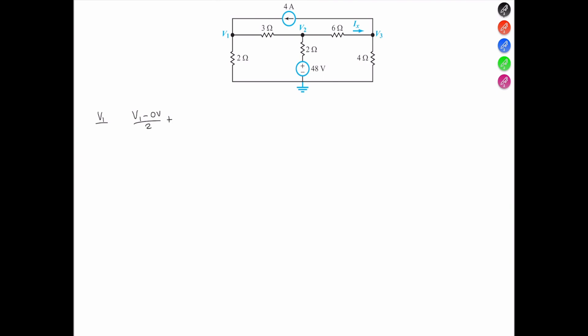Then we take V1 with reference to V2, minus V2 all over the 3-ohms resistor. Then notice that there is a 4-amp current entering to V1, and current entering a node is negative, so that's negative 4 equals 0.